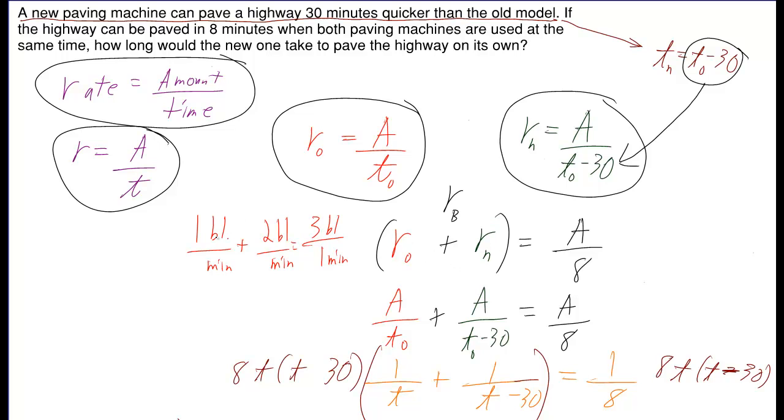Now if that doesn't make sense to you, think about a simple example. Like if rate of the old one was one block per minute and the new one was two blocks per minute. Well, if you put them together on that highway, then they'll be able to do three blocks in one minute. So it should make a little bit of sense that you can just add the rates.